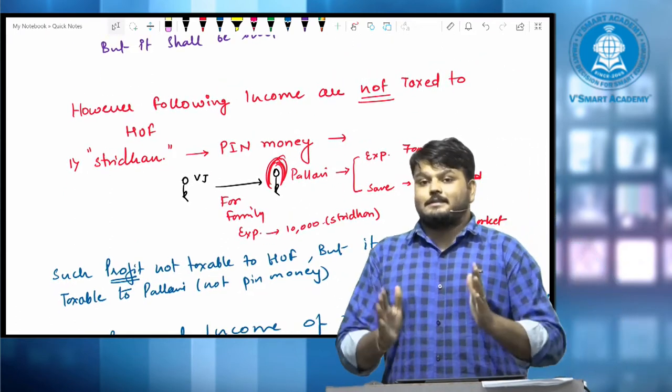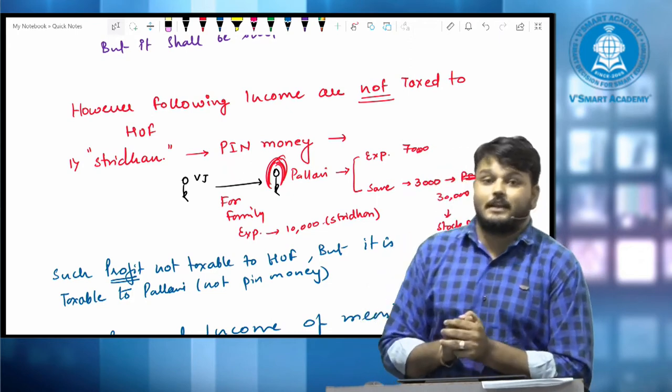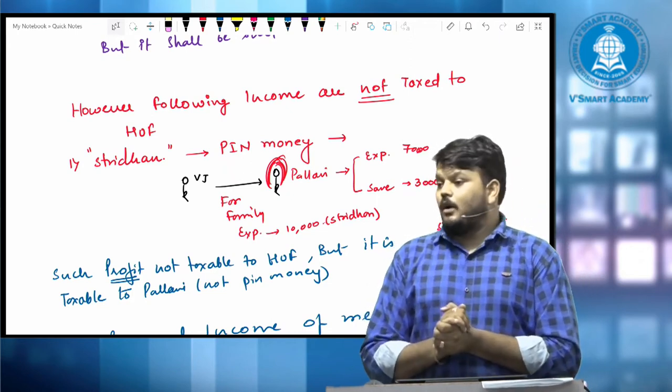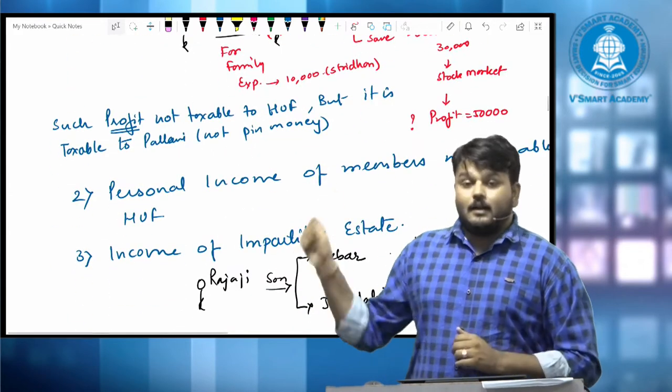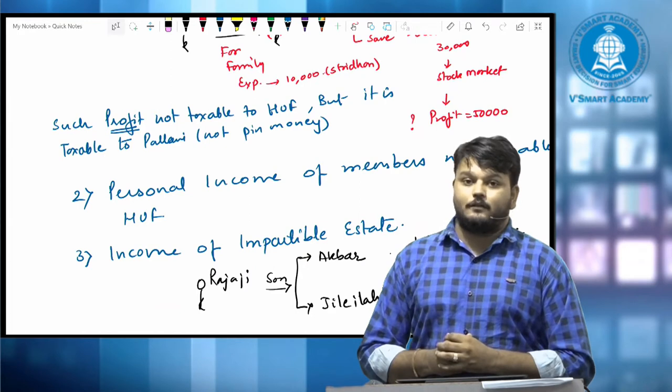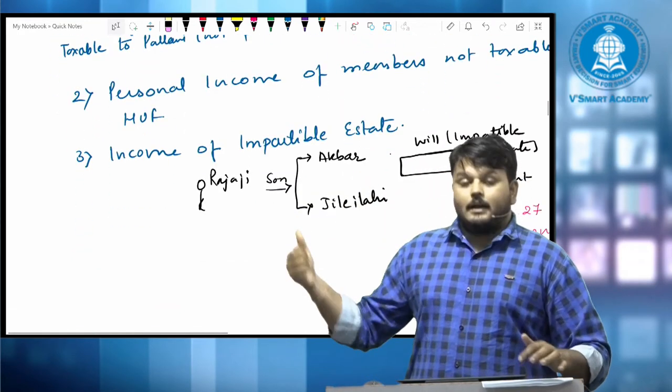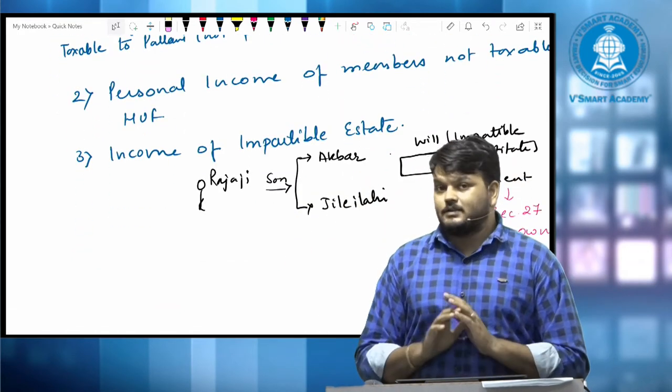Following incomes are not taxable under the H.U.F. The first one is Stridhan, that is the pin money of any women. Stridhan, not taxable under the head of H.U.F. Second, personal income of any member, not taxable under the head of income for H.U.F. Income from impartable estate is not taxable.